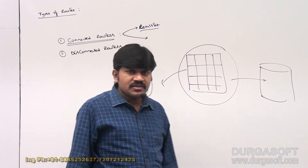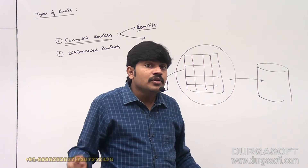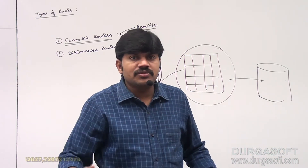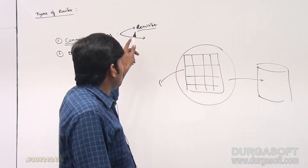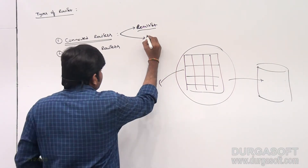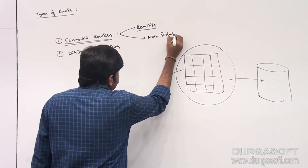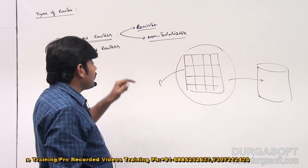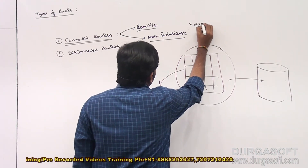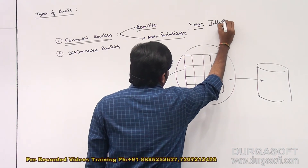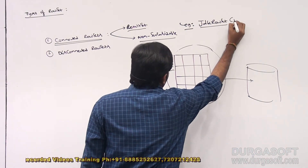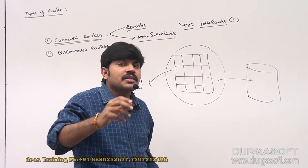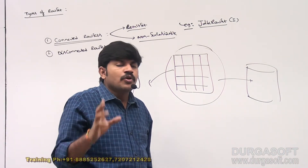Connected RowSets — you can't serialize them. You can't send this RowSet object across the network, because to access data from the RowSet a connection is compulsorily required. You can't serialize your connection object. That's why these types of RowSets are non-serializable. The best example of a connected RowSet is JdbcRowSet.